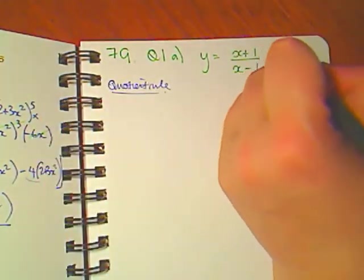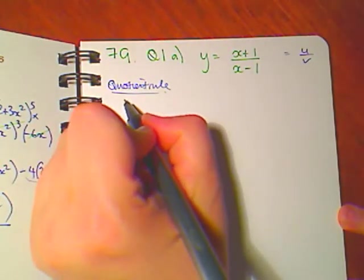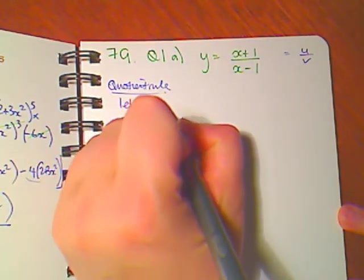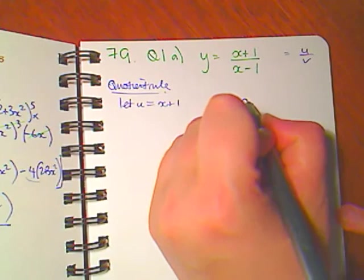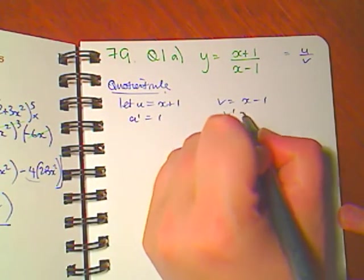We're going to make two substitutions. We want this to look like u over v. So I'm going to write down that u is x plus 1, v is x minus 1, u dash is 1 and v dash is 1.